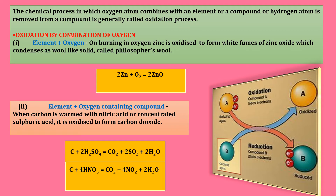Next, oxidation by combination of oxygen. From the definition, oxidation happens either by combination of oxygen or by removal of hydrogen. Taking the first condition — oxidation by combination of oxygen — there are two types: element plus oxygen, and element plus oxygen-containing compound. With an example, I am giving you the idea of element plus oxygen. First, see the reaction. Here zinc, Zn, is an element and O₂ is an oxygen molecule.